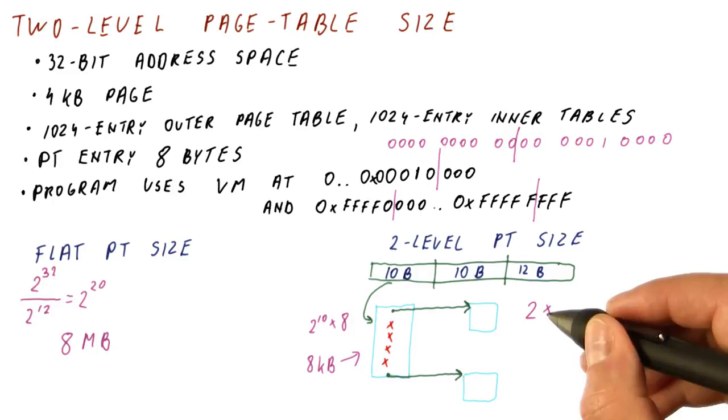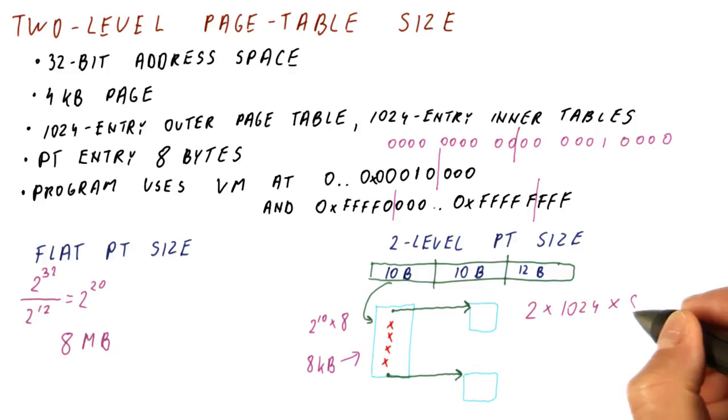Well, the size is 1,024 entries times 8 bytes per entry, which gives us a total of 16 kilobytes.